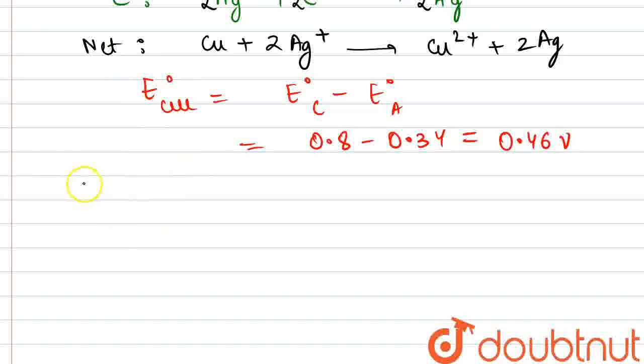Now, we will apply Nernst equation to the net cell reaction according to which E cell is equal to E° cell minus 0.0591 divided by n. n is the number of electrons gained and lost in the reaction, that is two here, into log of concentration of the product ions.